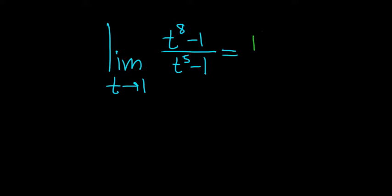So if we do that, we get 1 to the 8th minus 1 over 1 to the 5th minus 1. That gives us 1 minus 1 over 1 minus 1, so that's just 0 over 0.